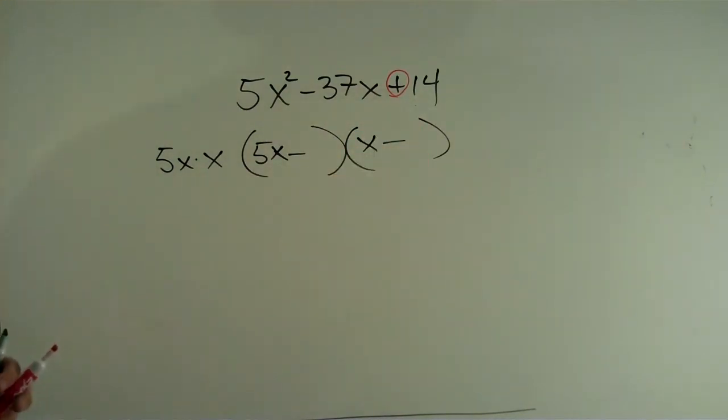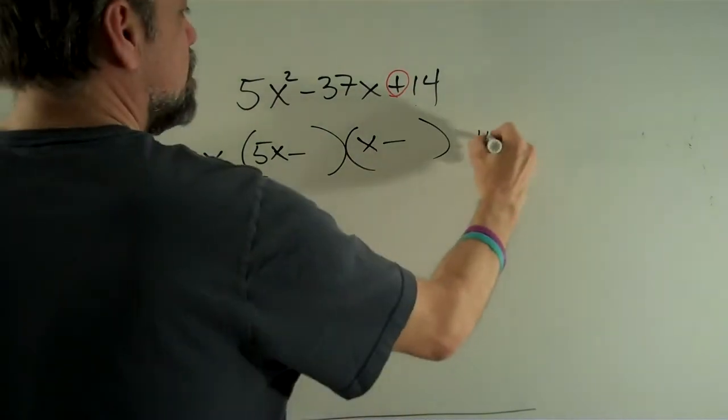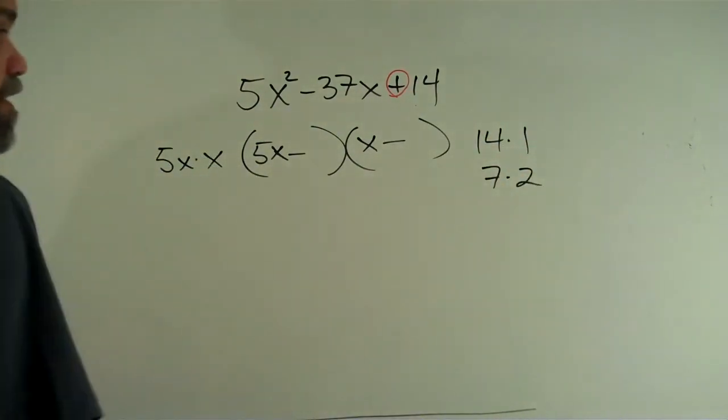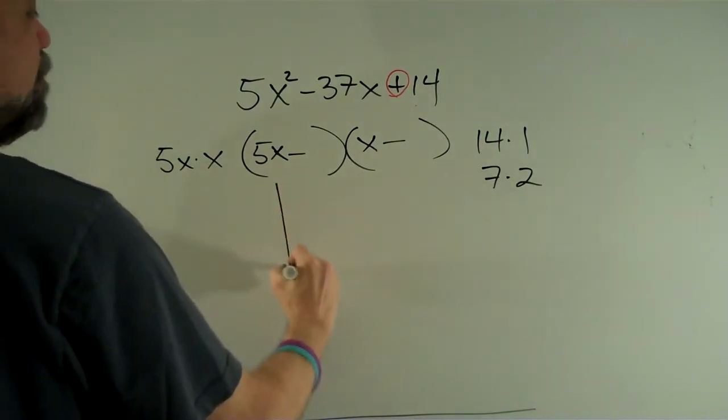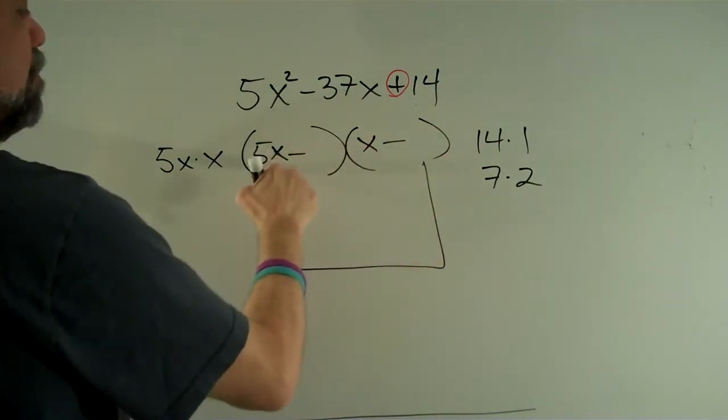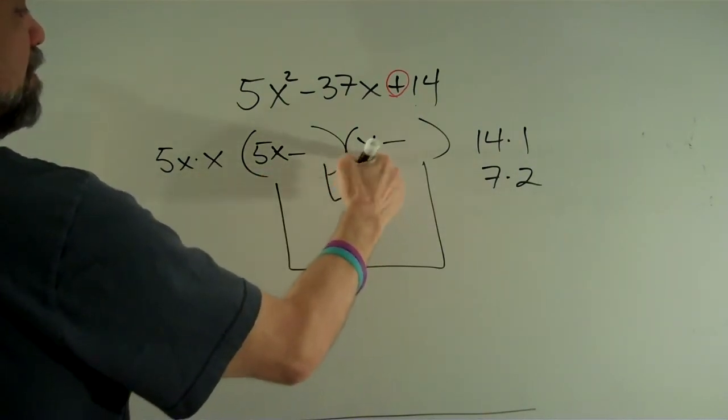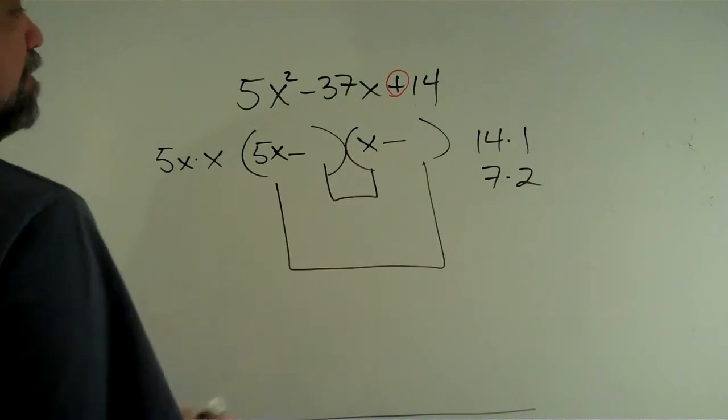And now 14. Hey, I'm in luck. There's only two ways I can get 14, and that's 14 times 1 or 7 times 2. So now what I have to do is I have to figure out what number am I going to put here, which gets multiplied by 5x. When I add it to this number here, I get 37.